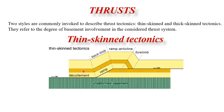Now we will study thrusts. Thrusts are low-angle reverse faults. Two styles are commonly invoked to describe thrust tectonics: thin-skin tectonics and thick-skin tectonics, referring to the degree of basement involvement. In thin-skin tectonics, as seen in foreland fold-and-thrust belts, the sedimentary cover is detached from the basement, typically along fault planes with ramp-flat geometry, while the strong crystalline basement remains undeformed.